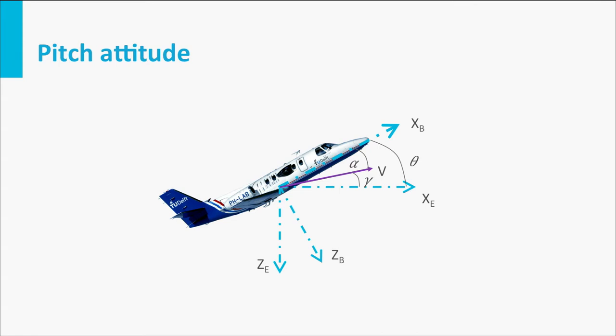the pilot observes the pitch attitude theta. The climb angle depends on the angle of attack as well, and this cannot be observed. In fact, the angle of attack is determined by the direction of the oncoming air flow. This is something the pilot cannot see.